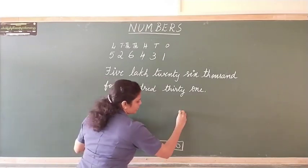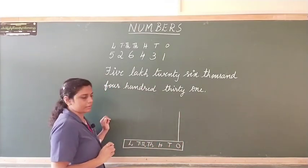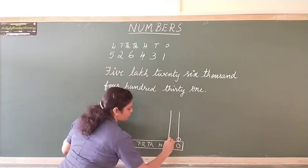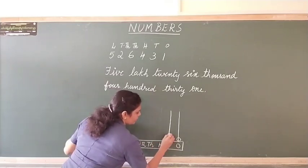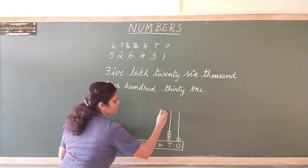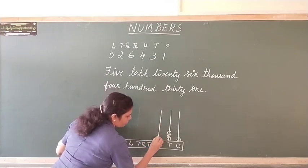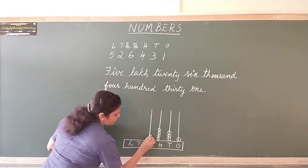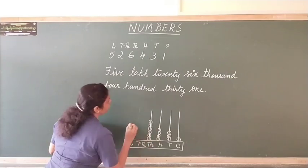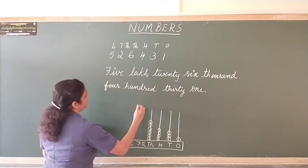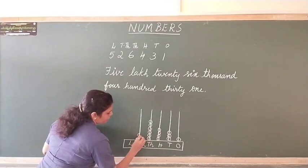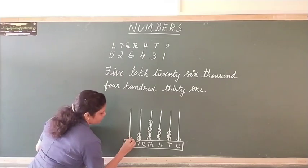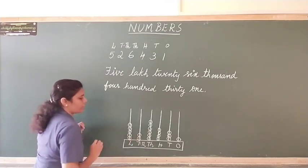So we start from the last digit, we have 1 in the ones place, so we write only 1 bead. In the second tens place we have 3, so we draw 3 beads in the tens place. 4 in the hundreds place, so we draw 4 beads. Thousands place it is 6, so 6 beads. In ten thousands place we have 2, so we draw 2 beads and finally in the lakhs place we have 5, so 1, 2, 3, 4 and 5 beads.